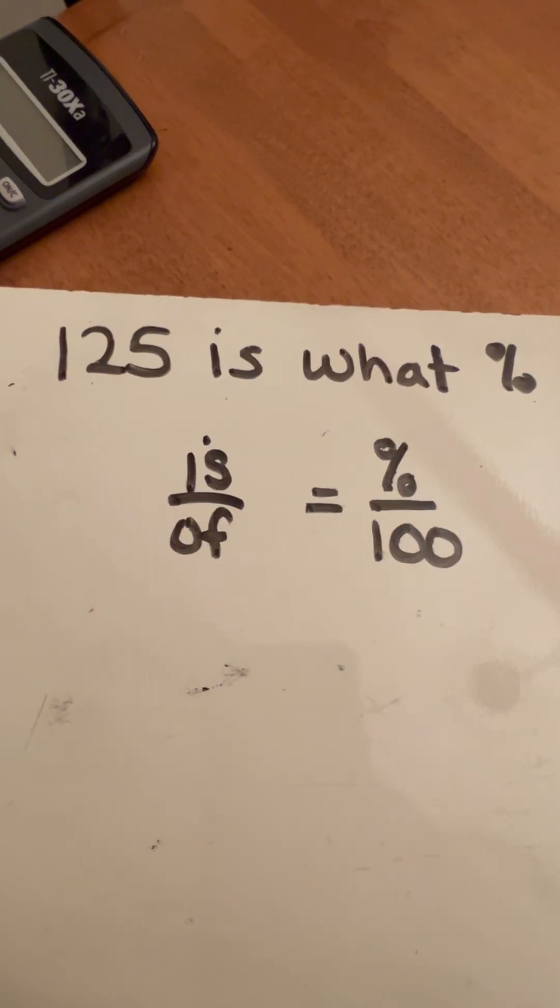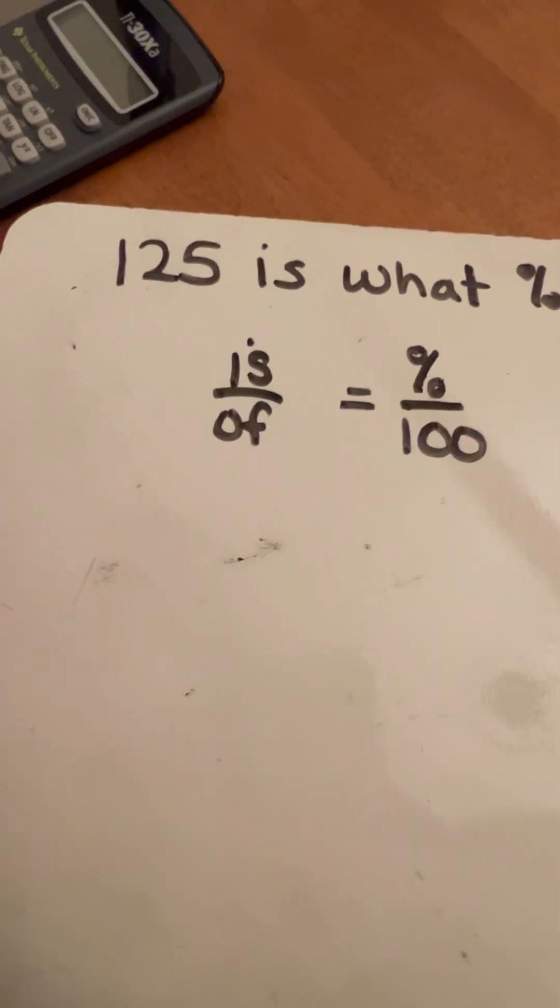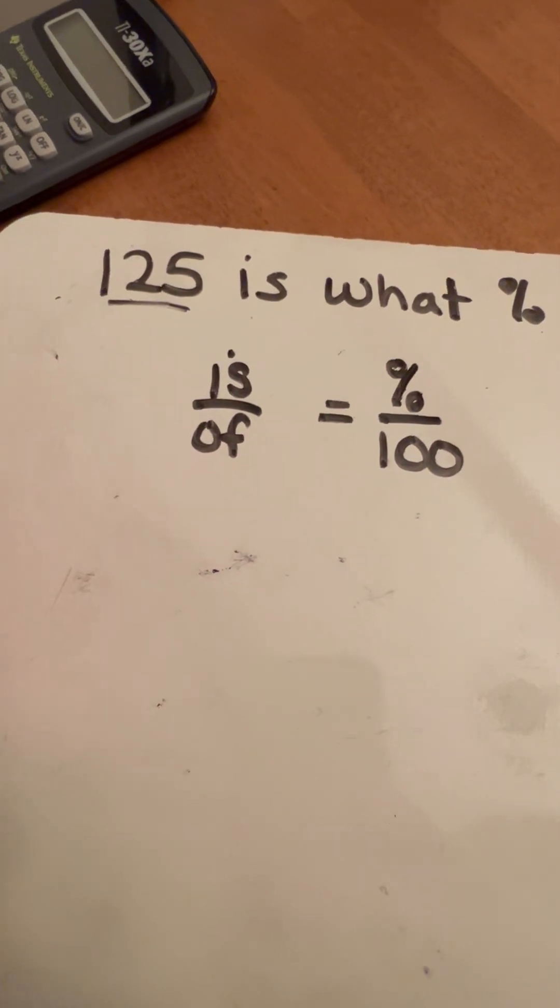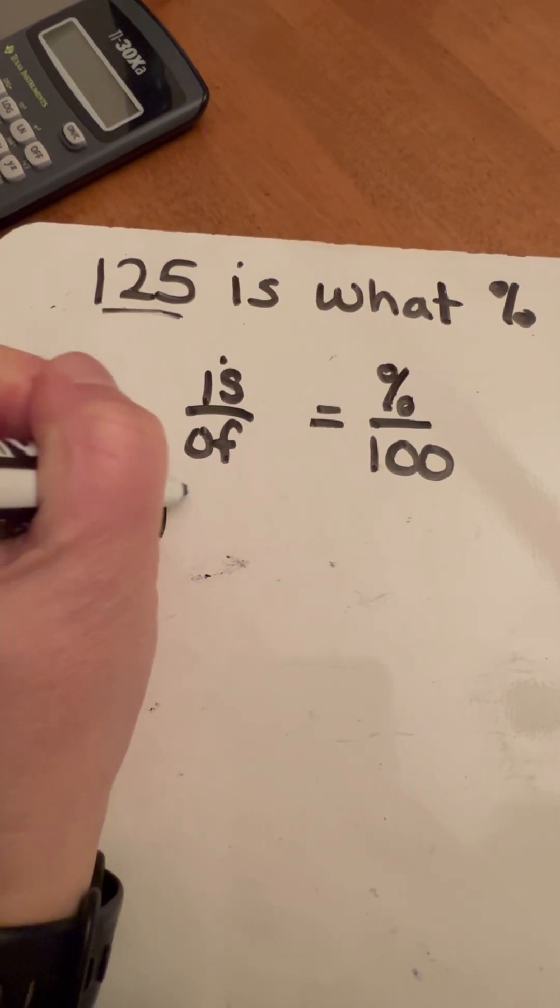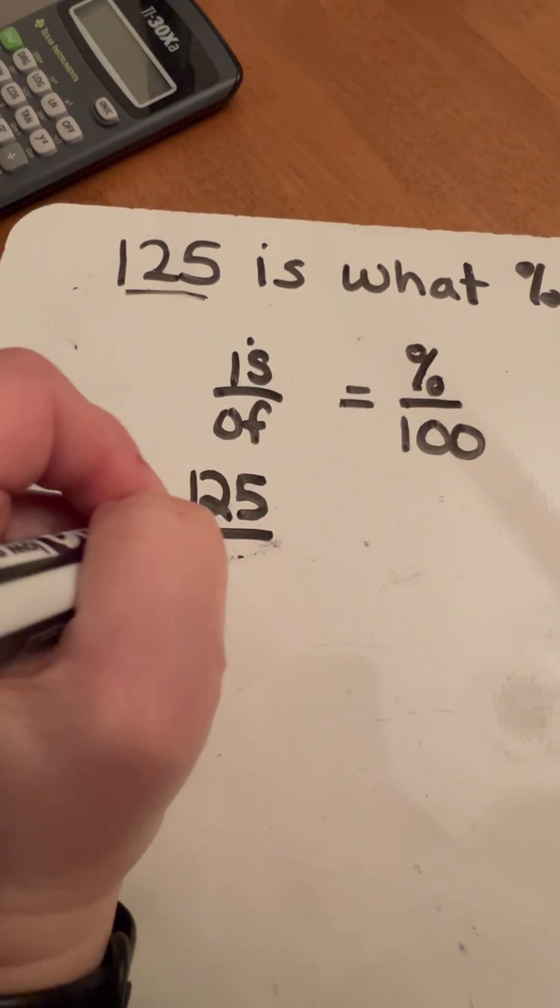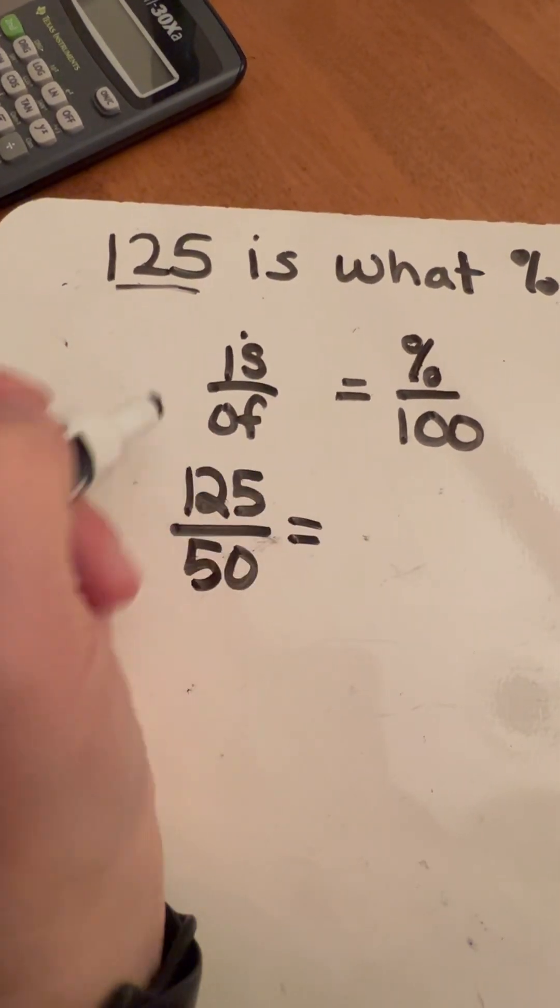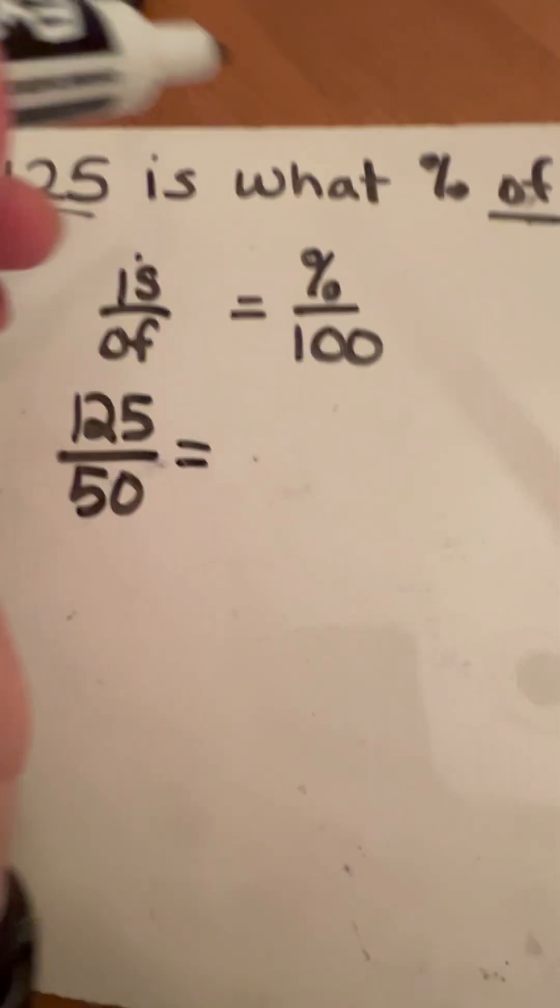So in this case, we have 125 is what percent of 50? So the 'is' is the 125. So I'm going to put that first on my numerator. My 'of' is 50. So obviously this is more than 100%. And then we're trying to figure out what percent that is.